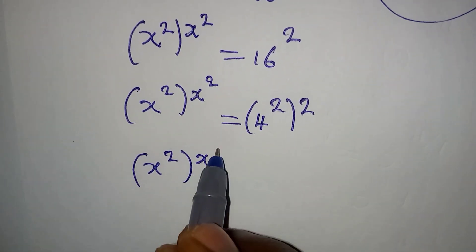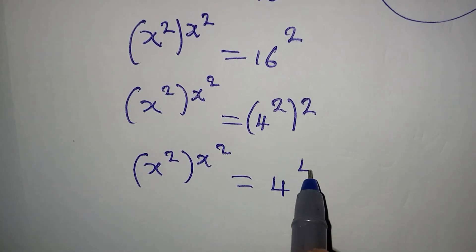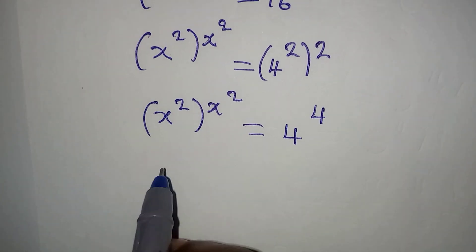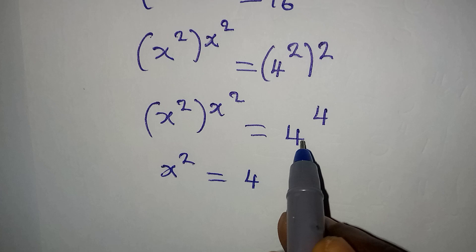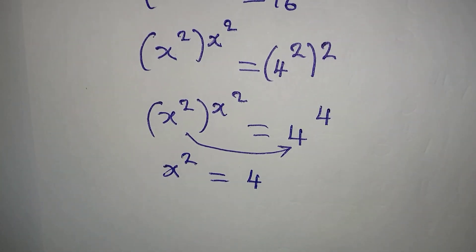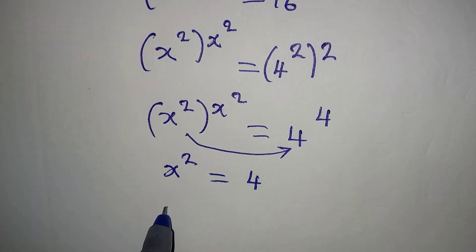What normally happens to the powers is that you multiply them. So x squared and then x squared will be equal to 4 to the power of 4. Now let's pick the base. If we pick the base, x to the power of 2 is the base and it's equal to 4.